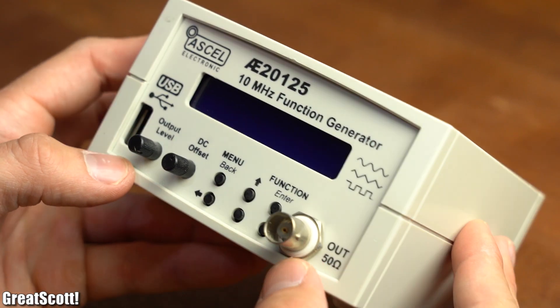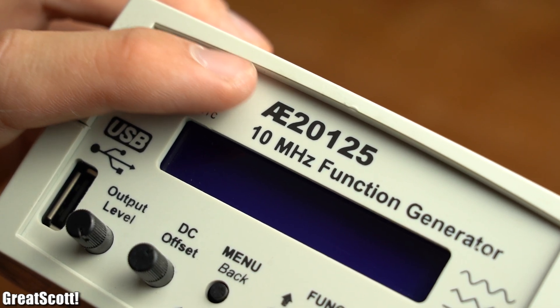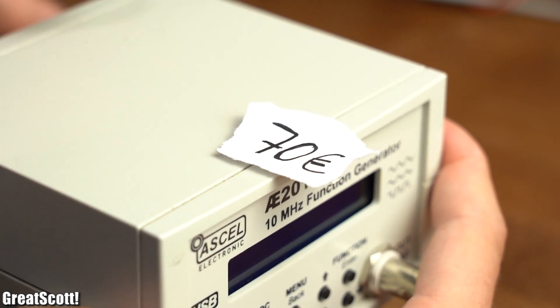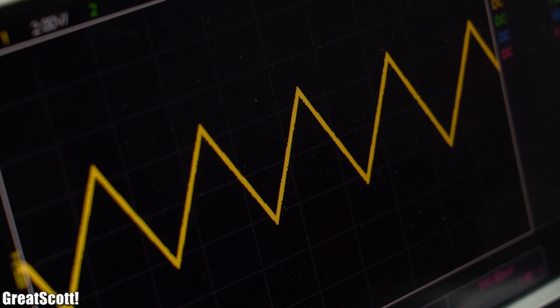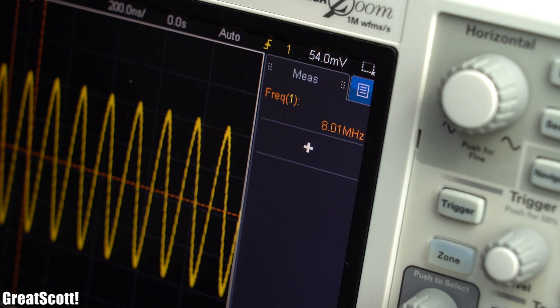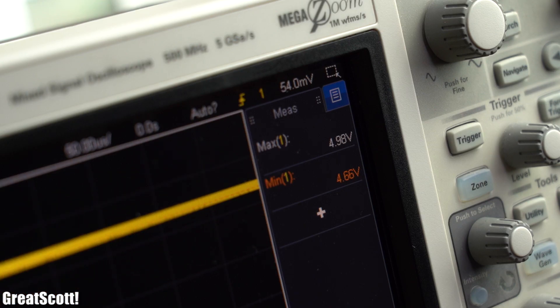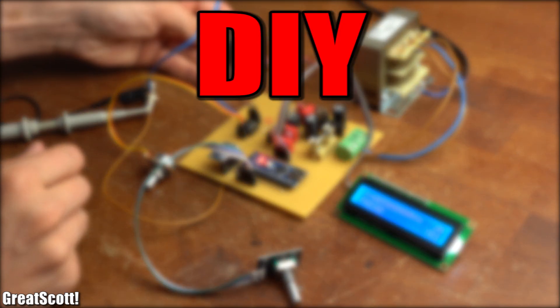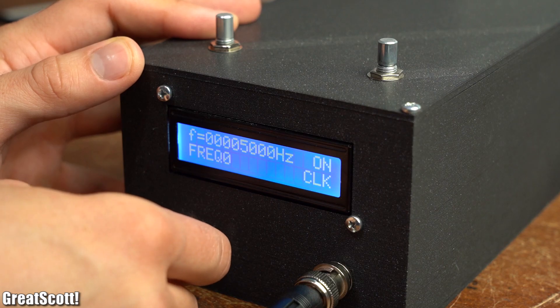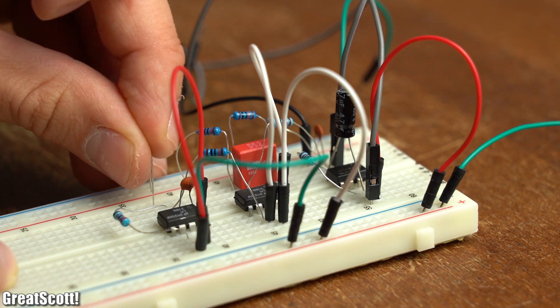Thankfully though, cheaper function generators do exist, like this AE20125, which you can get for around 70 euro. While this generator does create sine, square and triangle waves up to a frequency of partly 10 megahertz, I'm not satisfied with its maximum output level between minus and plus 5 volts. So in this episode of DIY or buy, let's see whether we can make our own decent function slash waveform generator or whether we should stick to the buy version instead.